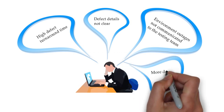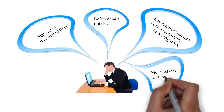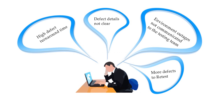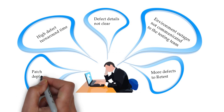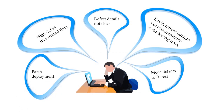Another risk can be a high number of defects in retest status. If there are many defects in retest, the linked test cases would be unblocked and testers need to invest more time in retesting the defects and clearing the test cases, which apparently affects the schedule of the project. Another risk can be patch deployment during the testing window, which can impact the test execution. We have now discussed many risks which can be seen in a project.